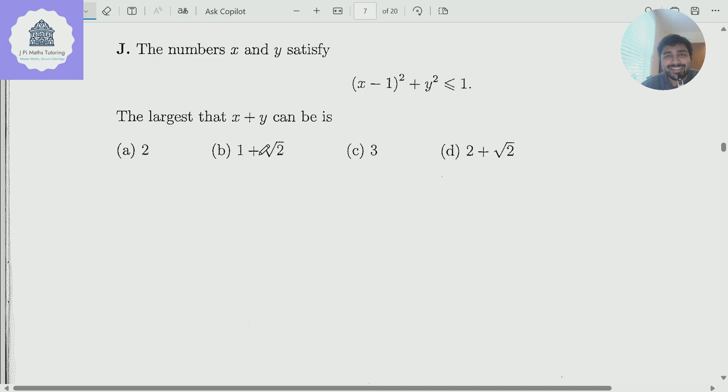Today I've got a problem from the Oxford University Mathematics Admissions Test. The numbers x and y satisfy (x - 1)² + y² ≤ 1. The largest value that x + y can be is which of these four numbers?